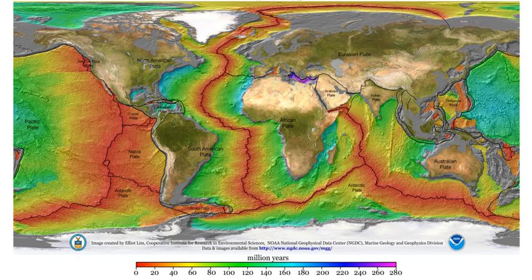The Earth's magnetic field protects the Earth from the deadly solar wind and has long been used for navigation. It originates in the fluid motions of the outer core. The magnetic field in the upper atmosphere gives rise to the auroras. The Earth's field is roughly like a tilted dipole, but it changes over time — a phenomenon called geomagnetic secular variation.